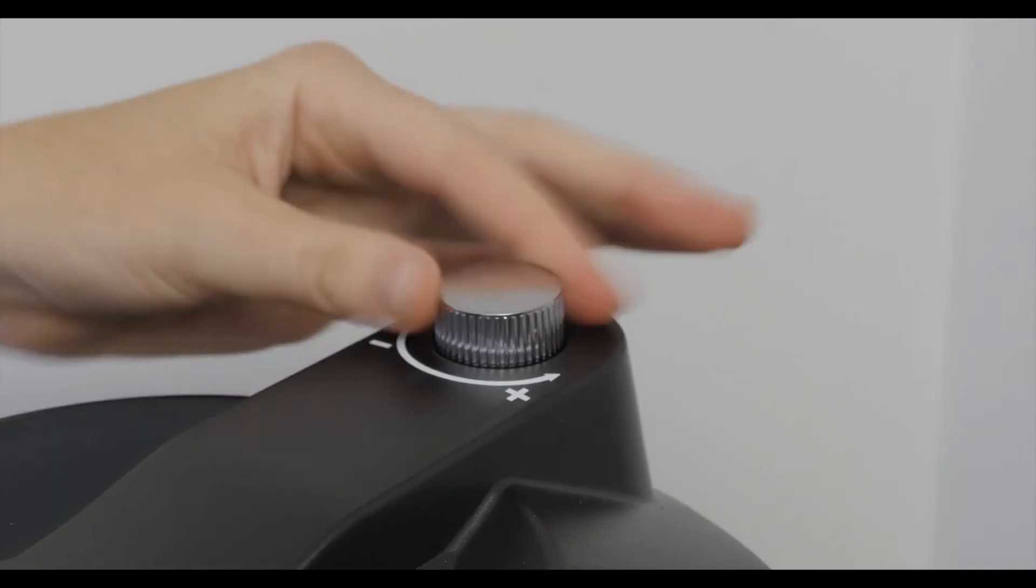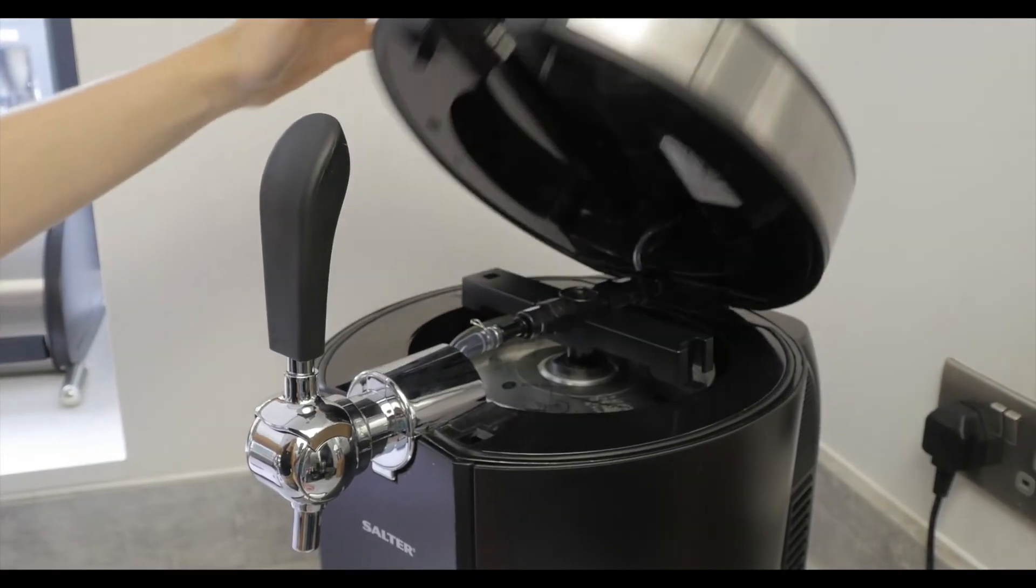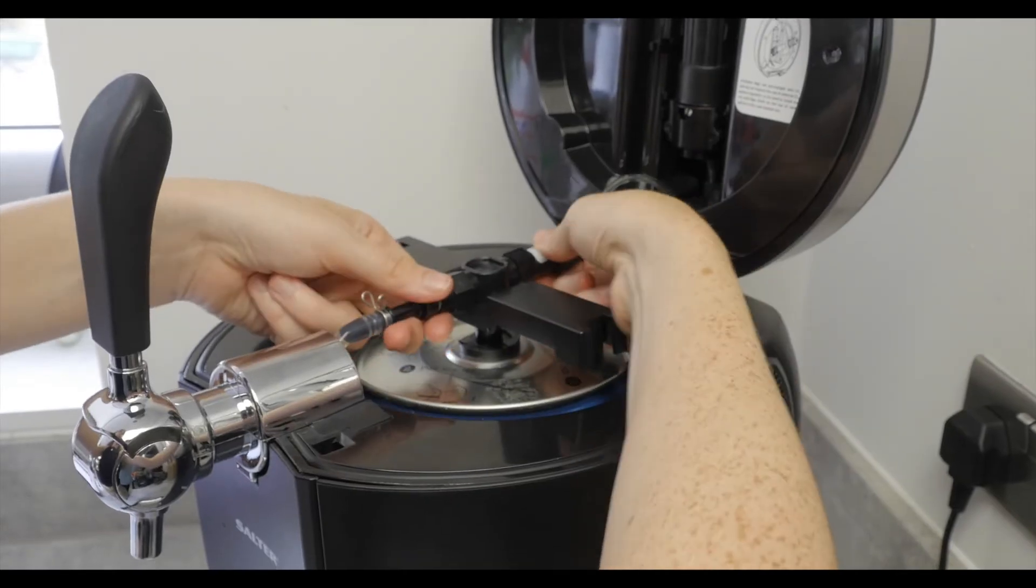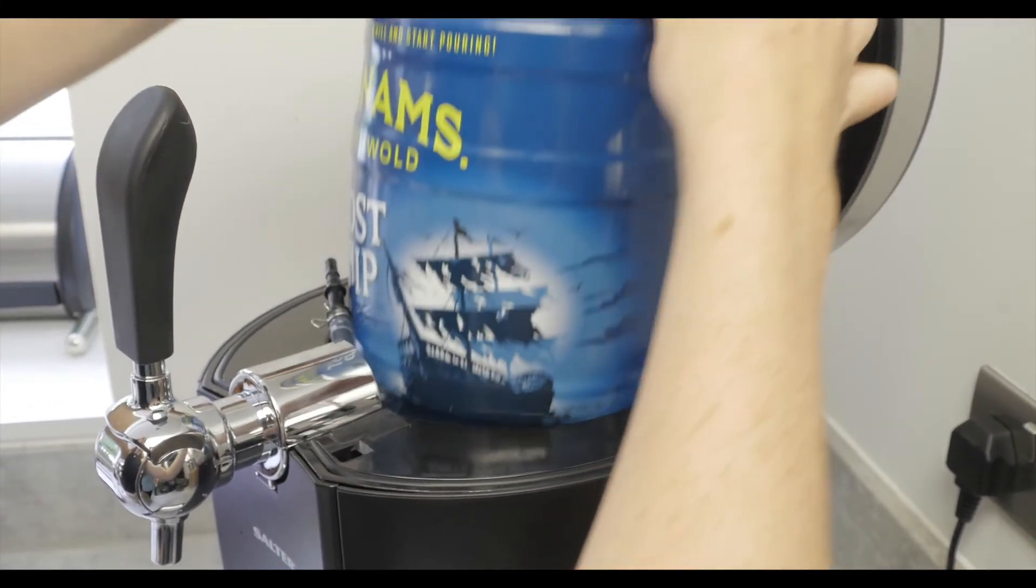To remove the keg, ensure the gas valve is closed by turning it towards the minus sign. Open the lid and disconnect the connection and remove the keg. Unclip the mount from the keg and pull out the keg pacing tube.